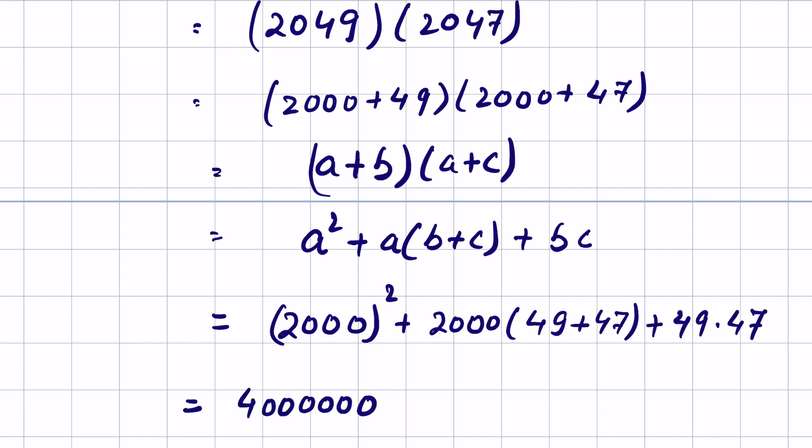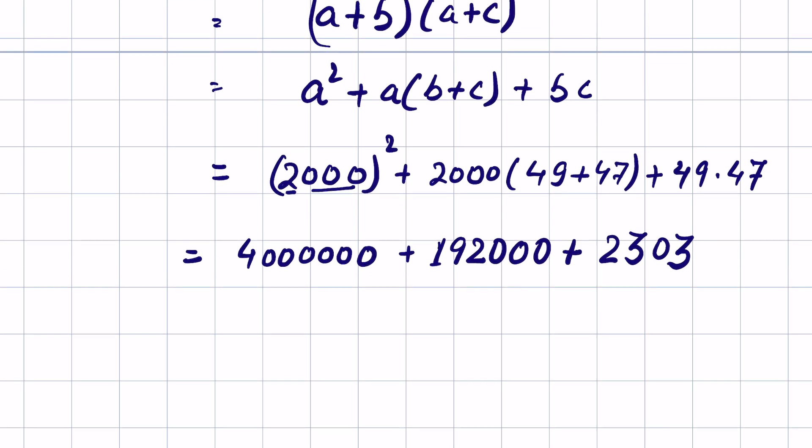2000 squared - write 2 squared then double the zeros - is 4000000. 49 plus 47 is 96, times 2000 is 192000. 49 times 47 is 2303. Adding these gives 4194303. This is our answer.